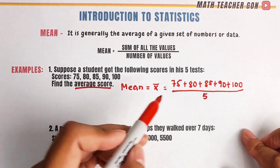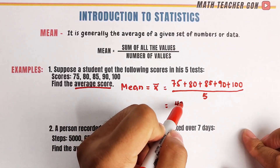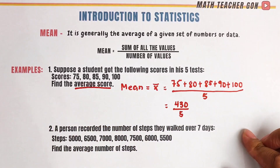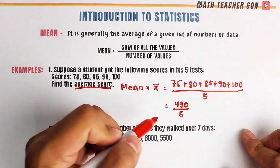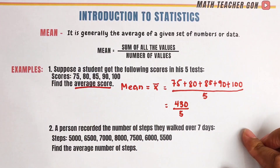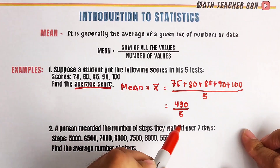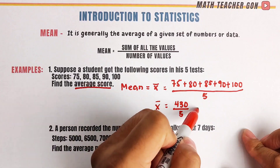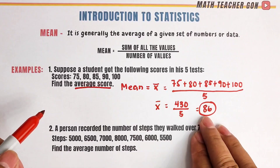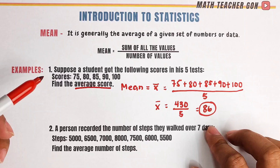Get the sum. When you add these using your calculator or by manual addition, it gives you 430, then over 5. When you divide 430 by 5, the correct answer is 86. So the average score of these test scores is simply 86.